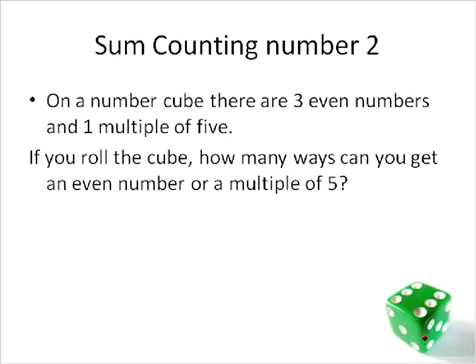On a number cube, there are three even numbers and one multiple of five. If you roll the cube, how many ways can you get an even number or a multiple of five? It's telling you that there are three even numbers and one multiple of five, and asking how many ways you can get either one.